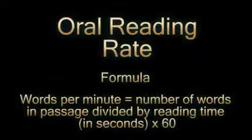We can measure a reader's oral reading rate with the following formula: words per minute equals the number of words in a passage divided by the reading time in seconds, times 60. You'll practice using this technique now — you'll assess a reader's oral reading rate using the formula.